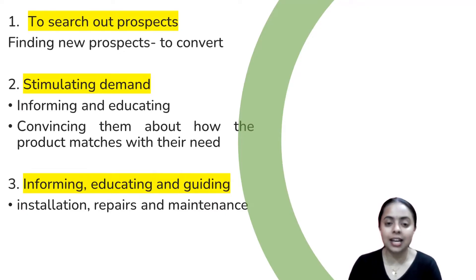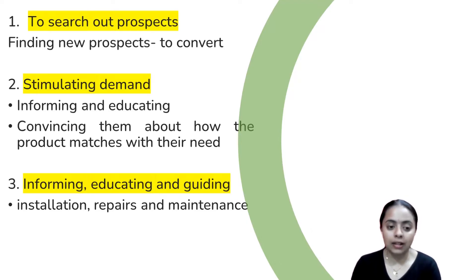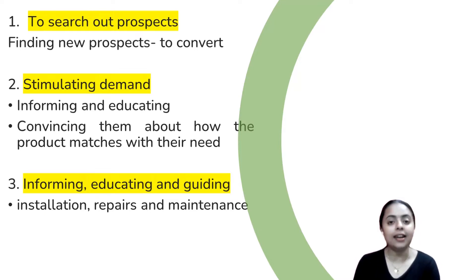The second qualitative objective is stimulating demand. The third point is informing, educating, and guiding. These two are similar mechanisms — stimulating demand convinces the customer. Informing and guiding covers installation, repair and maintenance, and product usage. These three things — stimulating demand, informing, and educating — are qualitative objectives.